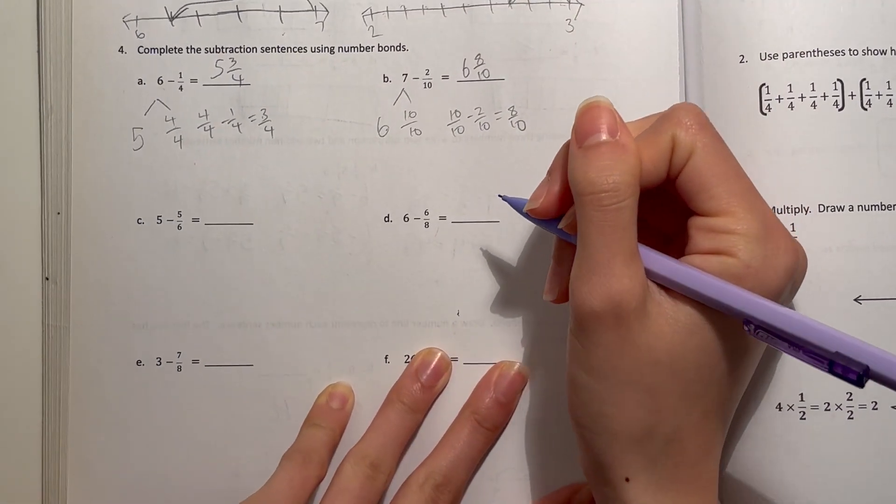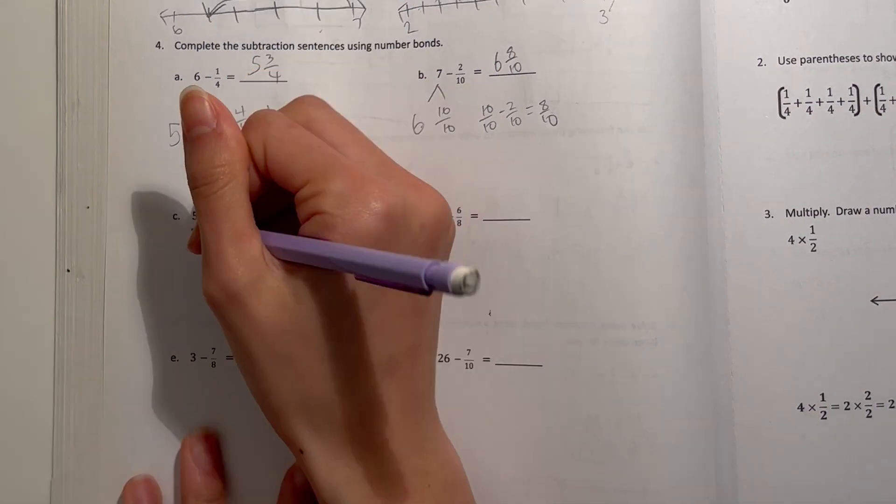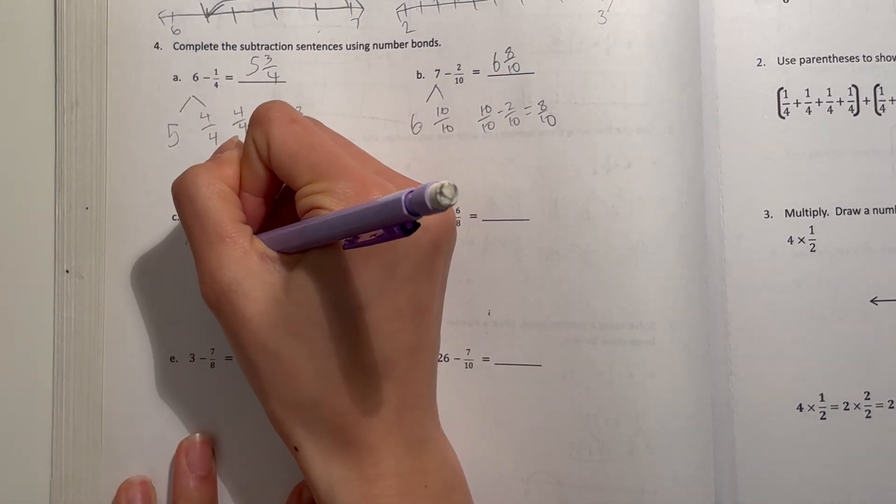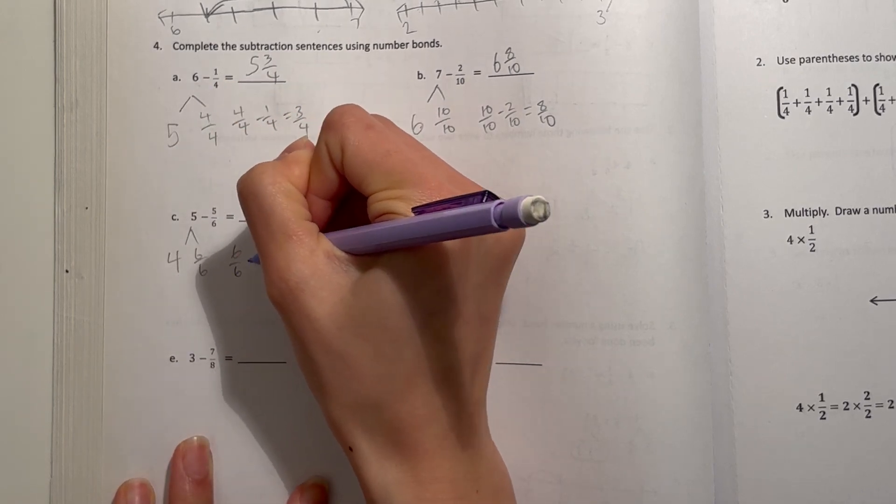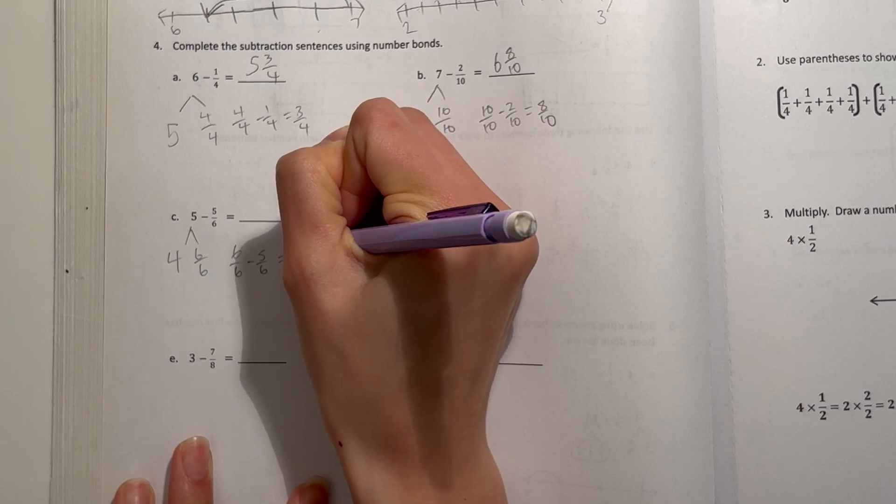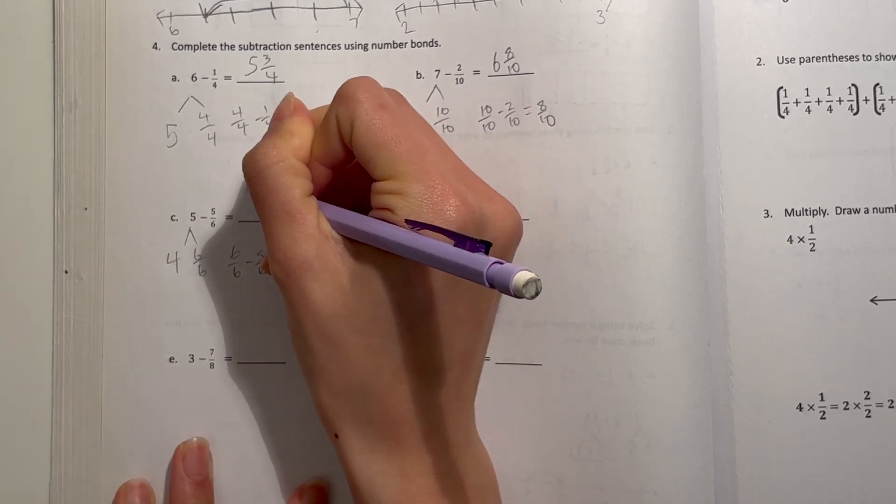Now, C, 5 minus 5 sixths, take out 6 sixths, that's 4 left over. 6 sixths minus 5 sixths is 1 sixth. So that's 4 and 1 sixth.